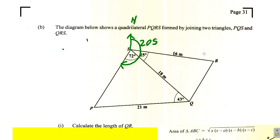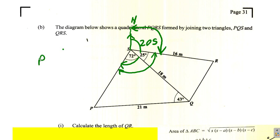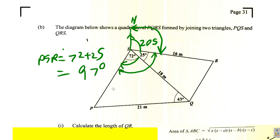Determine the bearing of R from S. The bearing of R from S means the angle you want is this one here. Now, the angle PSR — you can't see it directly, but angle PSR equals 72 plus 25, which is 97 degrees.